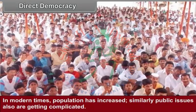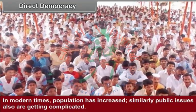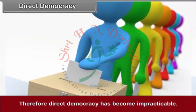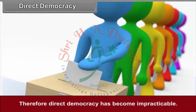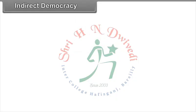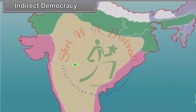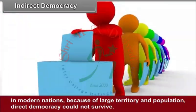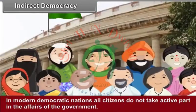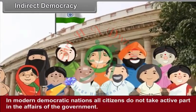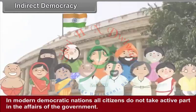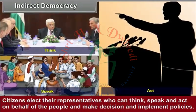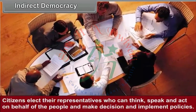In modern times, population has increased and public issues are also getting complicated. Therefore, direct democracy has become impracticable. Because of large territory and population, direct democracy could not survive. In modern democratic nations, all citizens do not take active part in the affairs of the government. Citizens elect their representatives who can think, speak, and act on behalf of the people, and make decisions and implement policies.